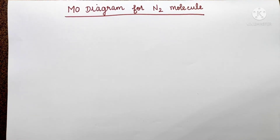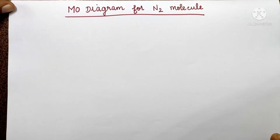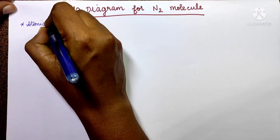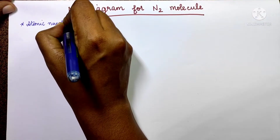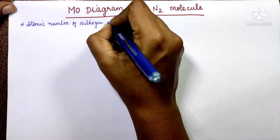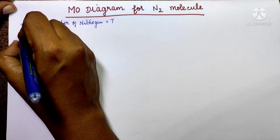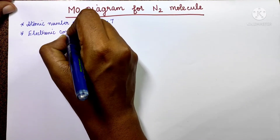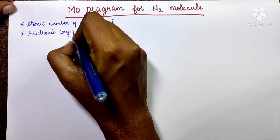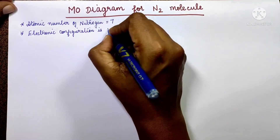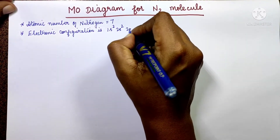Before going to the molecular orbital diagram, let's first write the atomic number of nitrogen and its electron configuration. The atomic number of nitrogen is 7, and its electron configuration is 1s², 2s², 2p³.